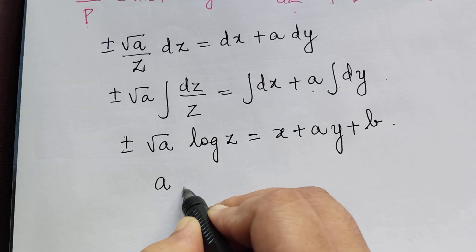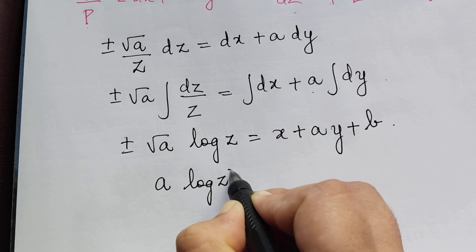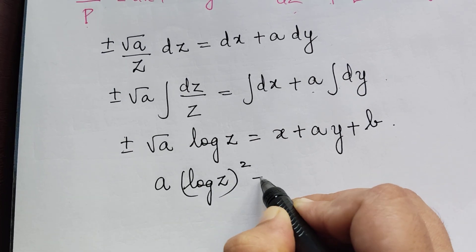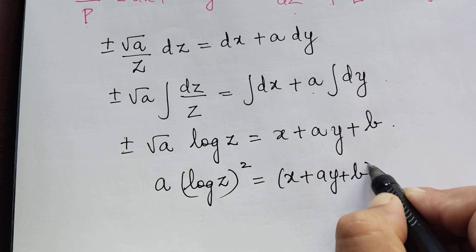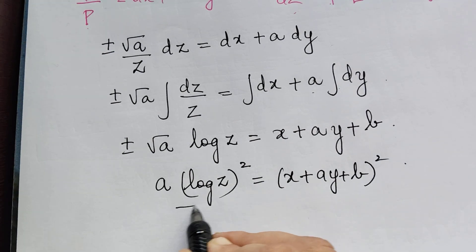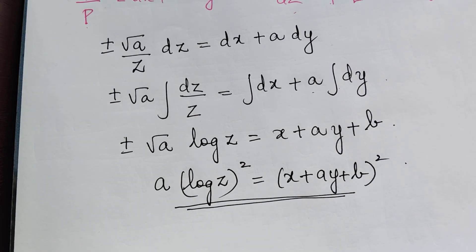squared gives A. So A(log Z)² = (x + Ay + B)². This is the required solution of the given problem.